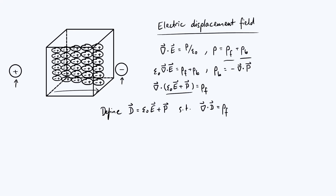The geometrical interpretation of divergence means it measures the extent to which field lines of a vector field emerge from a point. So the displacement field D satisfies the property we were hoping for: it only emerges from free charges rather than bound charges. Another way this is often phrased is that free charge can act as sources and sinks of the displacement field, whereas bound charge cannot. Note that you don't need a free charge density to have a displacement field — you can have ∇·D = 0 but still have a non-zero D field.